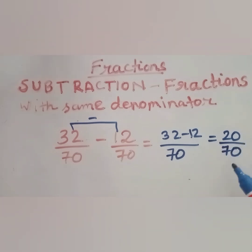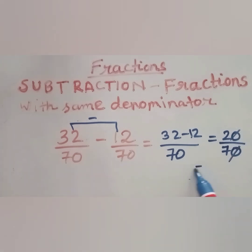Here it can be simplified further. The zeros get cancelled, so the answer is 2 by 7.